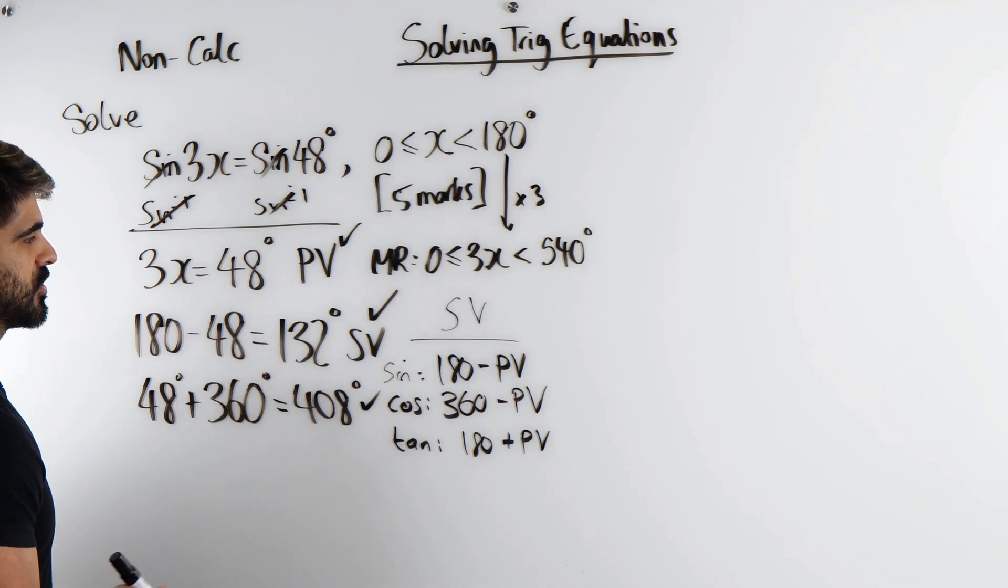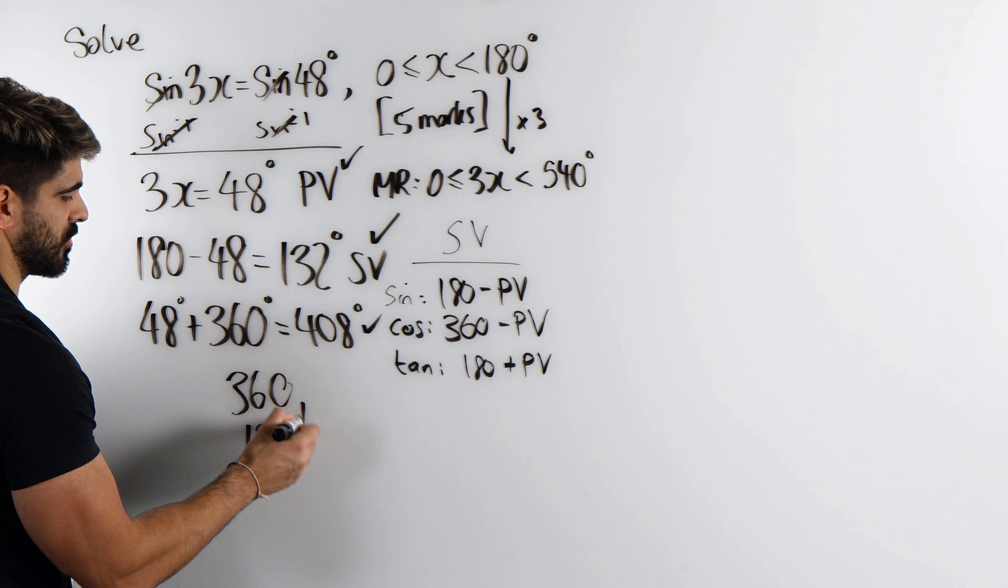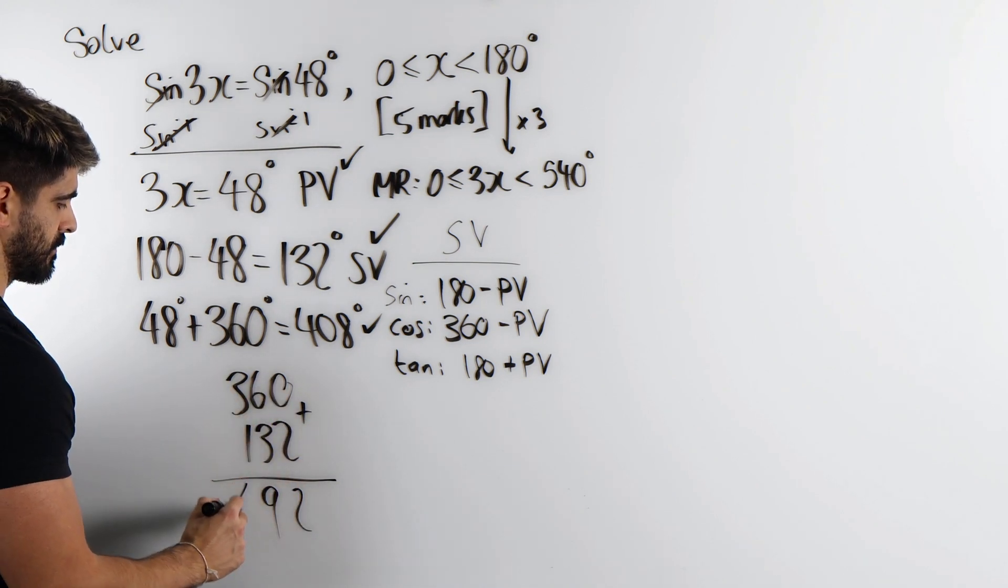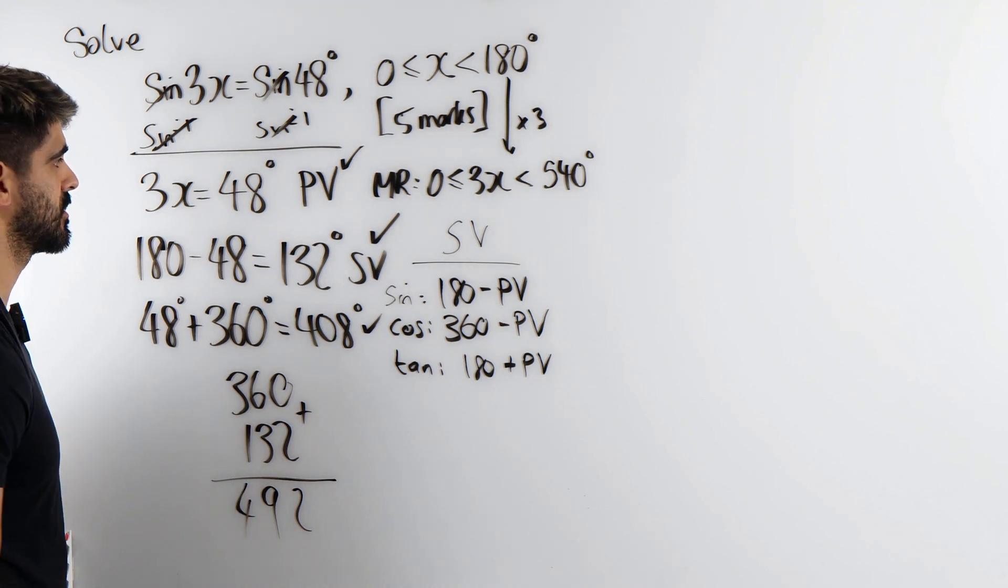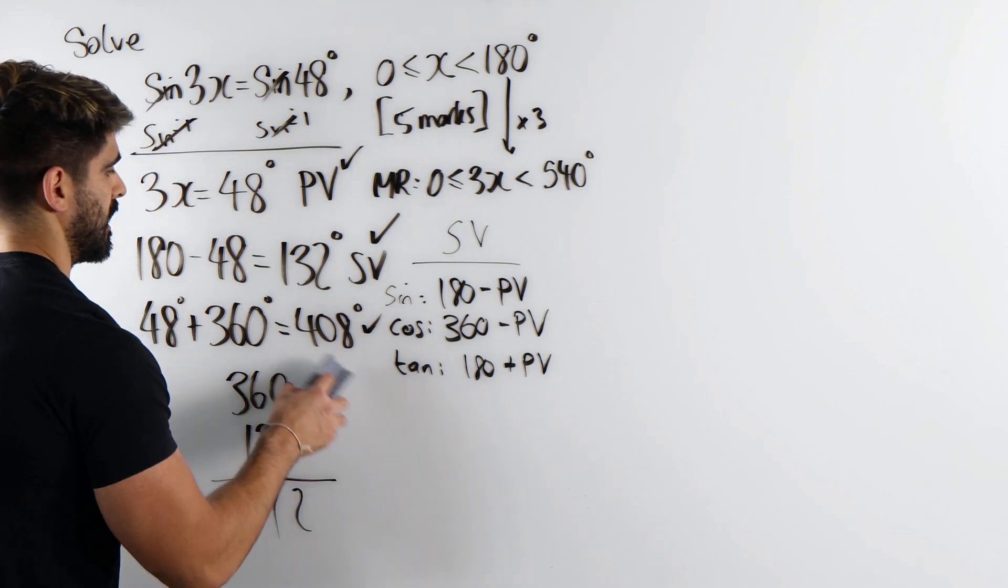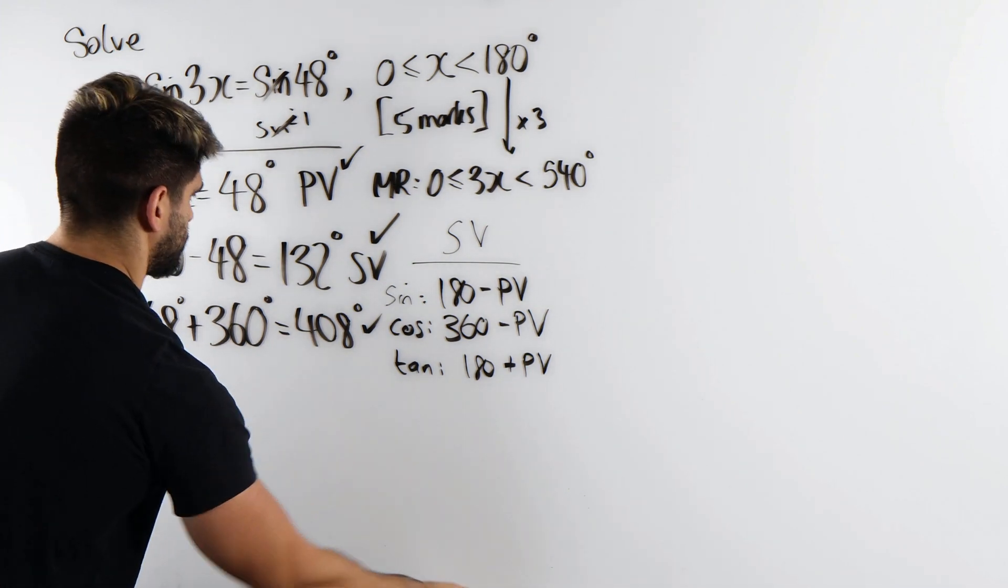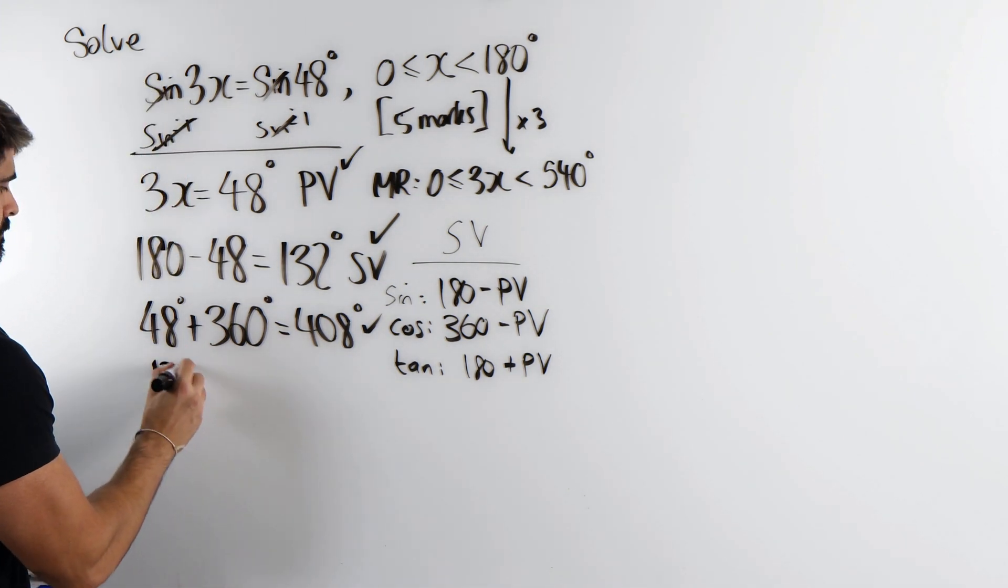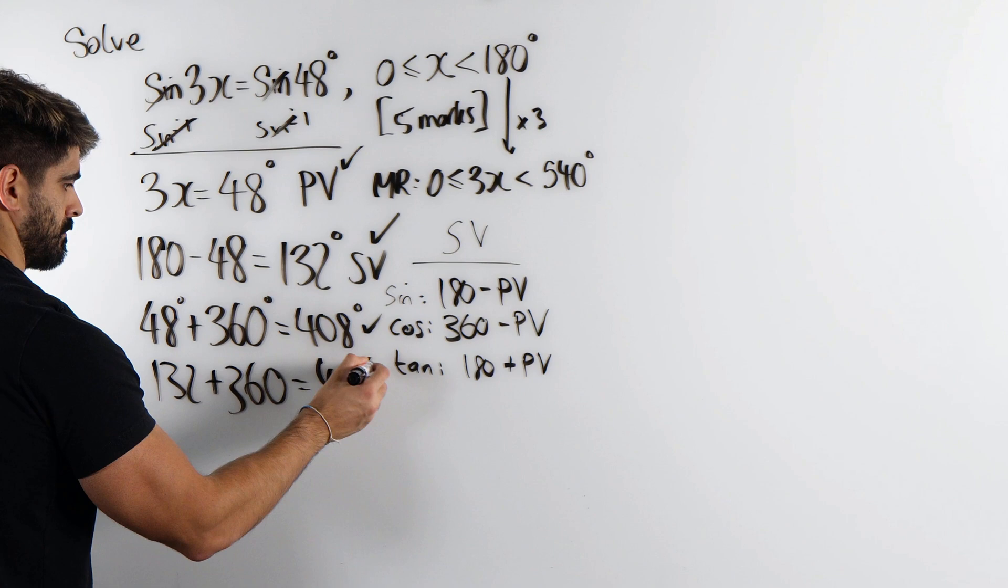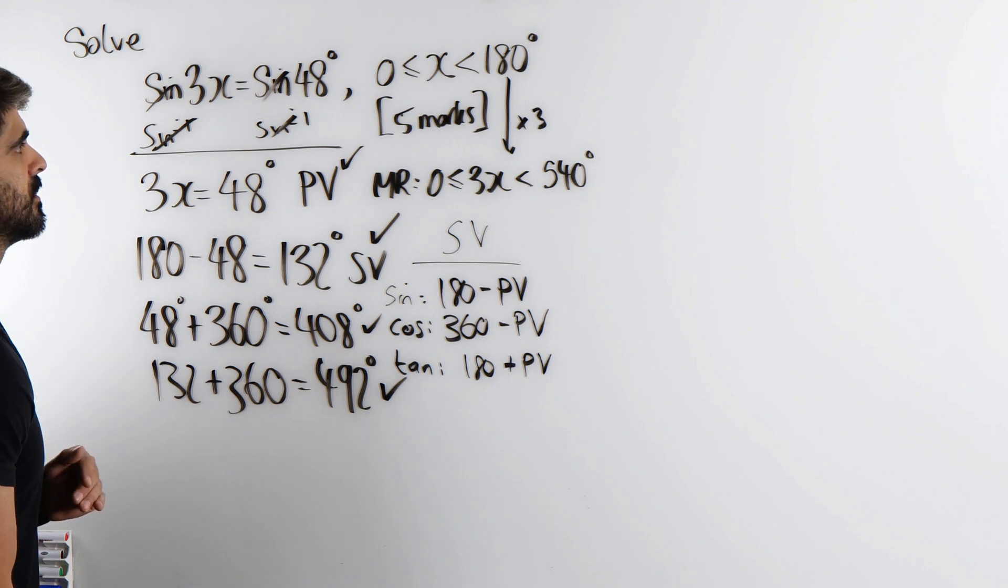And then with 132, if we add 360, would it be in the range? I think if you're in the exam and it's non-calc, you should just do a quick check. So we have 294. It is, so that's good. So we could write that down, 492. The rest of them will not though. This is in the range. So we have four values within the range.